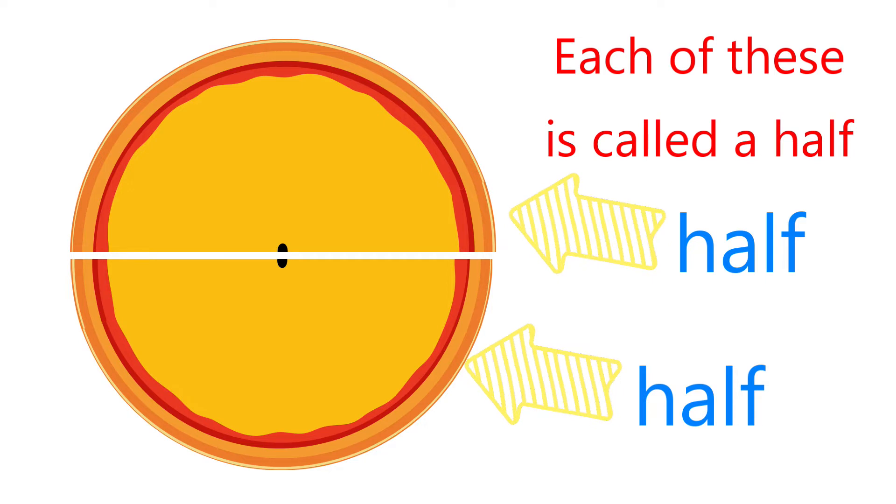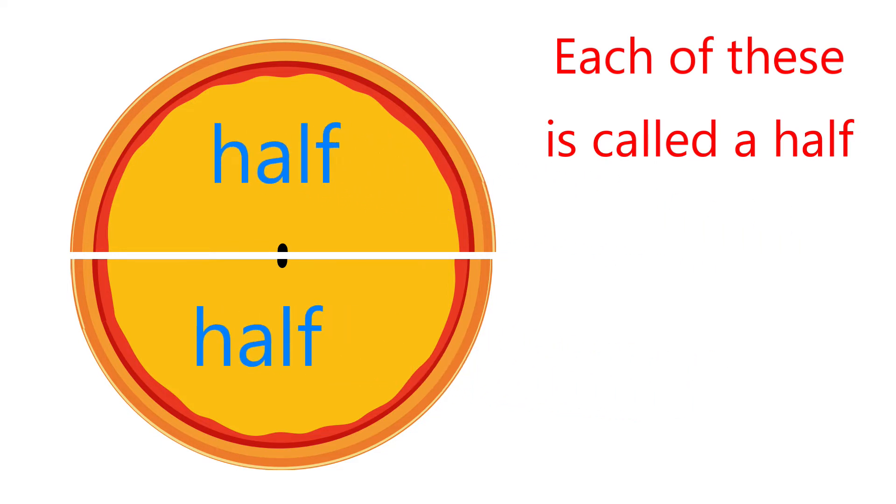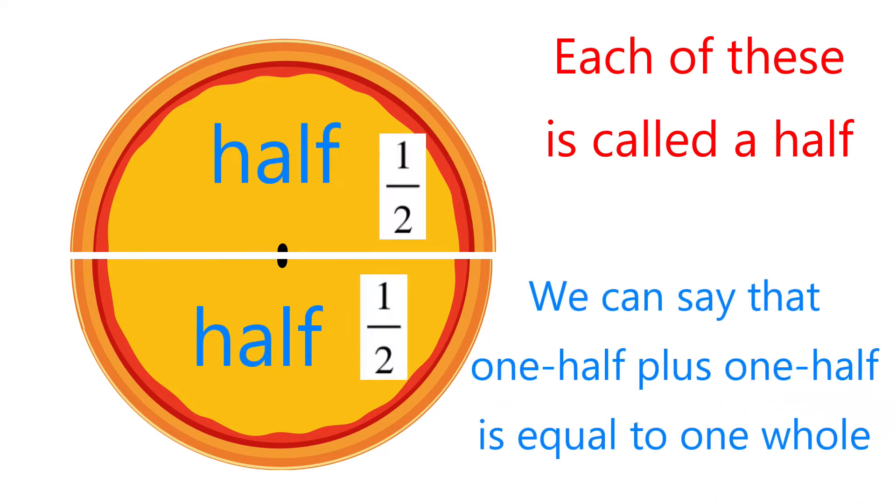We have one half and another one half. Each part is one half of the whole pizza. Notice that each section of the pizza is now half of the whole pizza. One half is written as one part out of two equal parts, or 1 over 2.